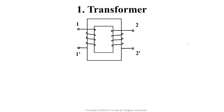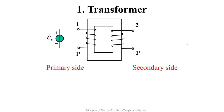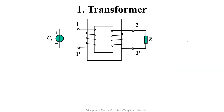The transformer has two ports. We usually call the left port — terminals one and one prime — the primary side, and terminals two and two prime on the right side the secondary side. We generally think that energy or signal is supplied from the primary side to the secondary side through the transformer.